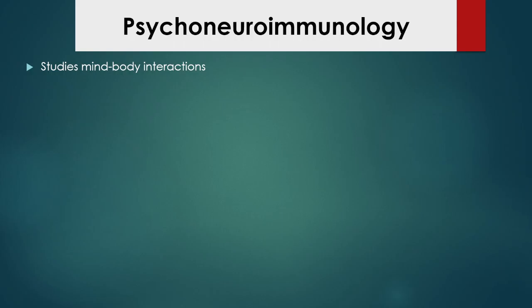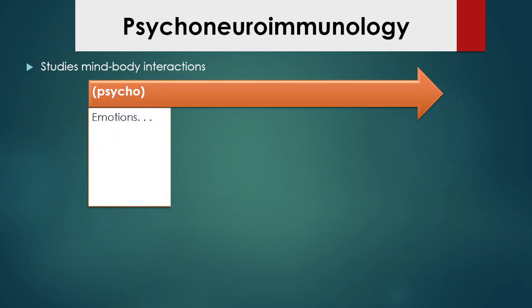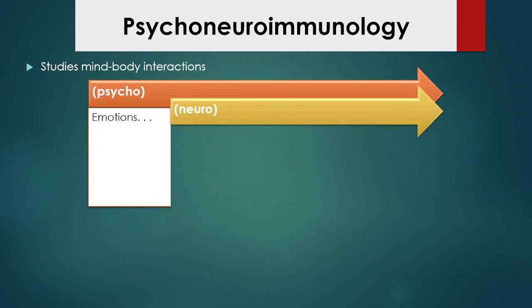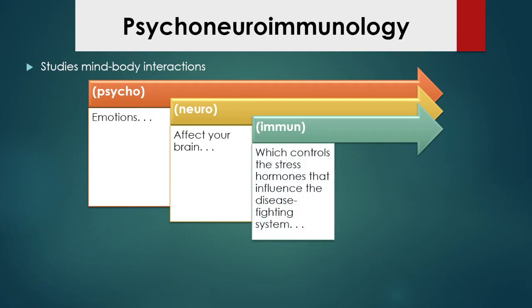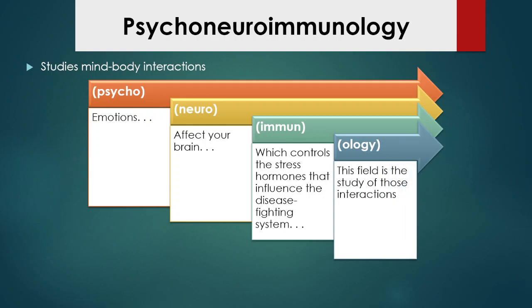So some studies on the mind-body interaction — we call that psychoneuroimmunology. The 'psycho' refers to the emotional component we're studying. The 'neuro' is going to be the brain part — so we're looking at how emotions affect your brain. The 'immuno' part is the immune system — how emotions affect your brain, which then controls the hormones and things that can have an impact on your immune system. And '-ology' stands for the study of this. So in psychoneuroimmunology, we are interested in this holistic mind-body interaction and how these all interact with each other.